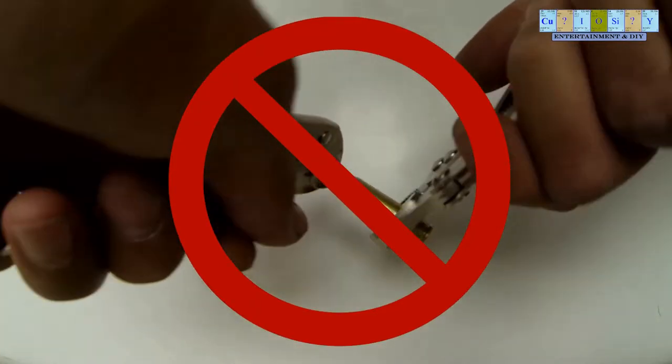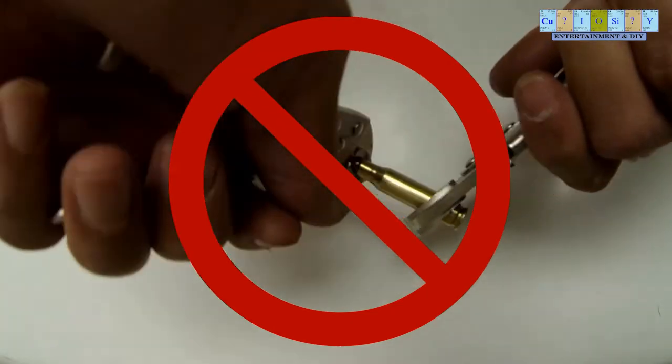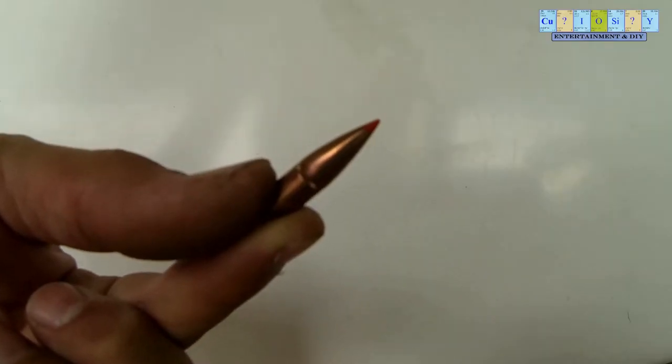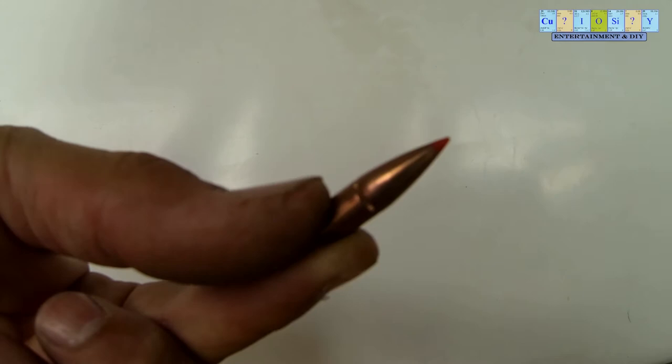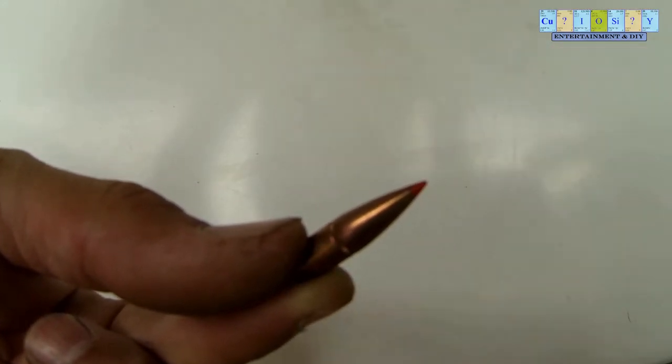Whatever you do, do not dismantle a live round as it is very dangerous and you can get seriously hurt. As for the projectile, try to use the ones with the plastic tip as they are a lot easier to work with.